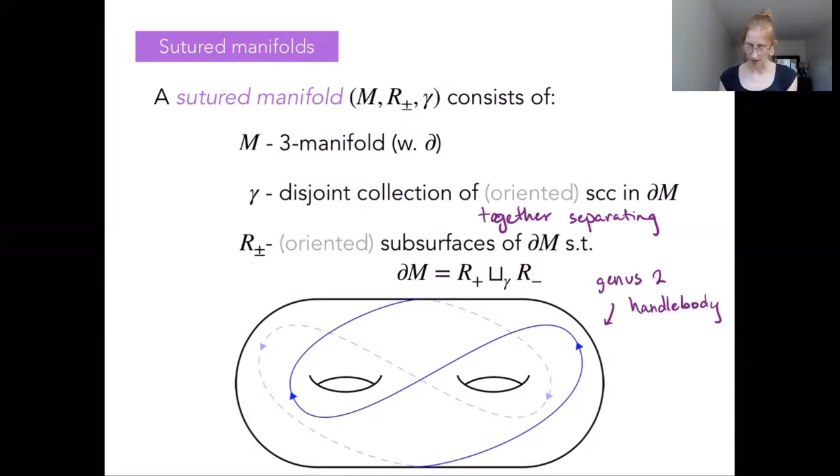So I've drawn down here my prototypical example I have in my head of what a sutured manifold looks like. So this is a genus two handlebody, which is to say it's a genus two surface where you've filled it in in the obvious way. And now my suture structure here is just a single curve separating the genus two boundary into two tori with one boundary component.